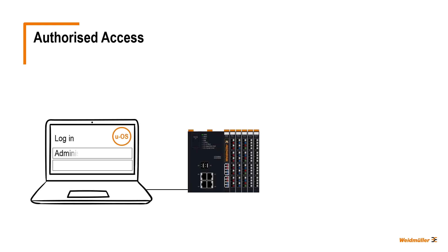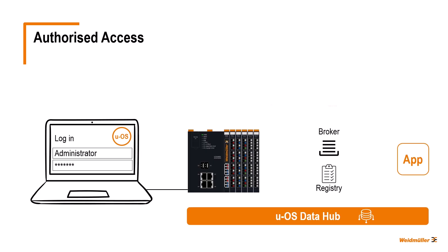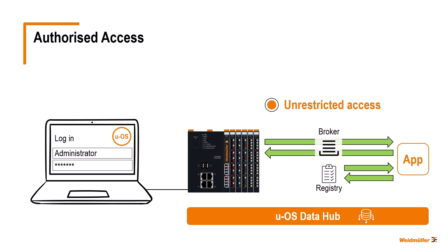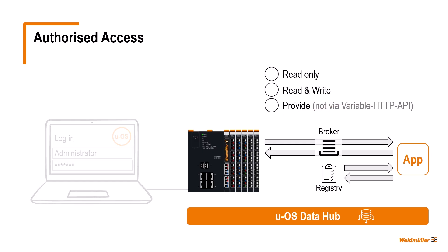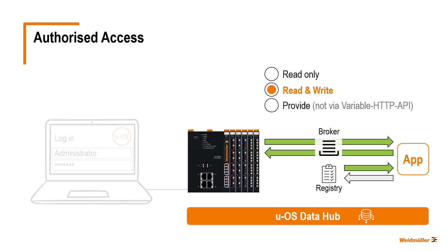Even if we are granted administrator rights by logging into UOS, this does not mean that I authorize my devices or every app to use all the data and functions of other devices or apps via an API. Firstly, I have to request rights for this — for example, read-only to read variables from the registry and their values, read-and-write to additionally overwrite variable values, or provide to create or change variables in the registry. In addition, my client must also be authorized to use these requested rights.